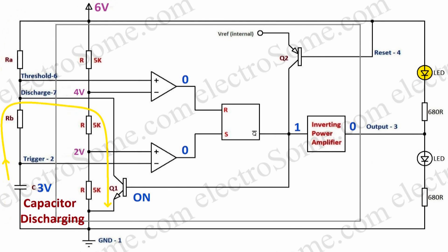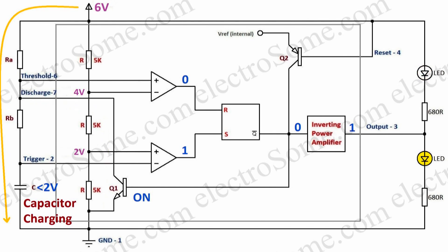But there will not be any change in the output as both inputs of the SR flip-flop are 0. When the capacitor voltage drops below 2 volts, the output of the lower comparator becomes 1. This makes the output of the 555 go high and the capacitor starts charging again. This cycle continues to make the operation of the astable multivibrator or dancing light.